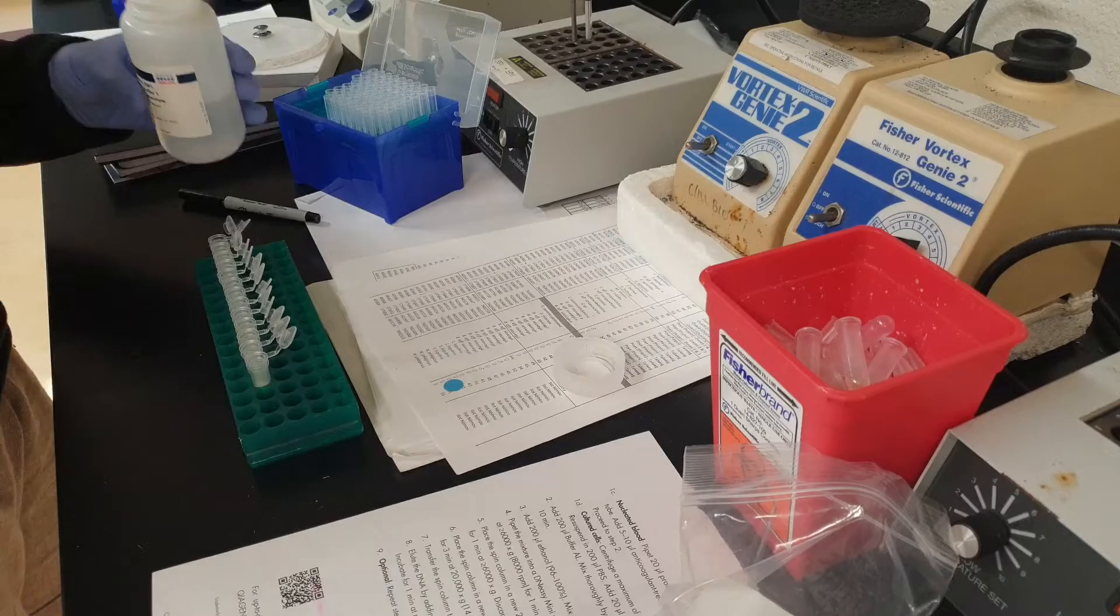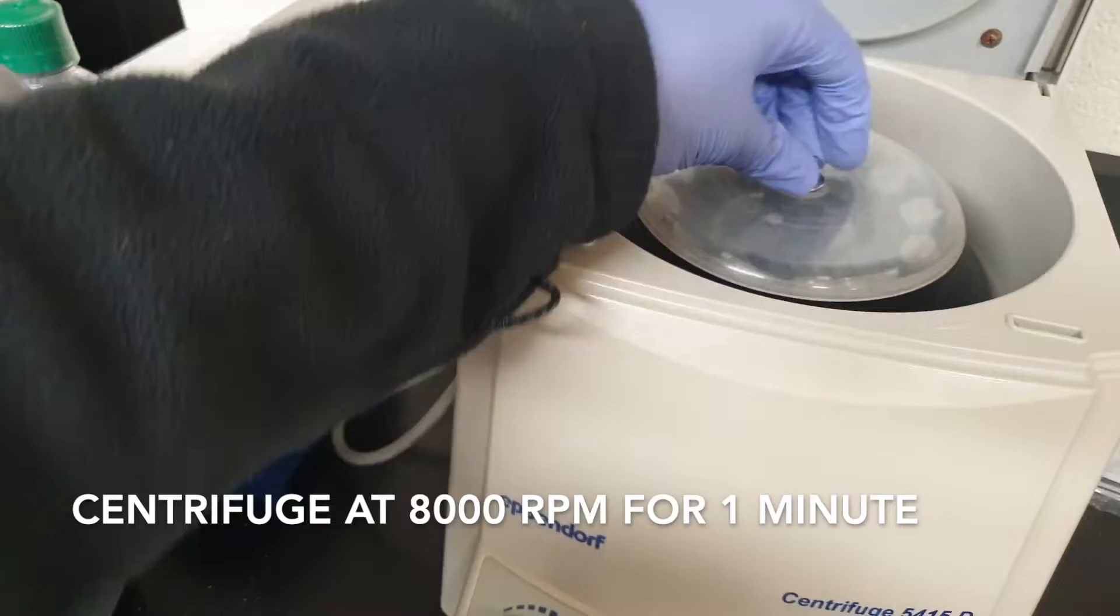Add 500 microliters of buffer AW1. Centrifuge at 8000 rpm for about a minute.